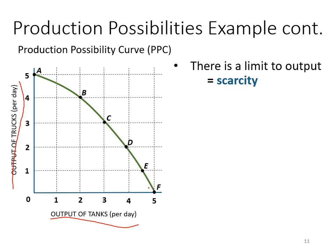The maximum number of tanks you can produce is also five, and if you produce five tanks, you can produce no trucks because you use all the resources for the tanks. In other words, there is a limit to your output — it is limited by your scarce resources. The intersections on the vertical and horizontal axes indicate that your resource is scarce.